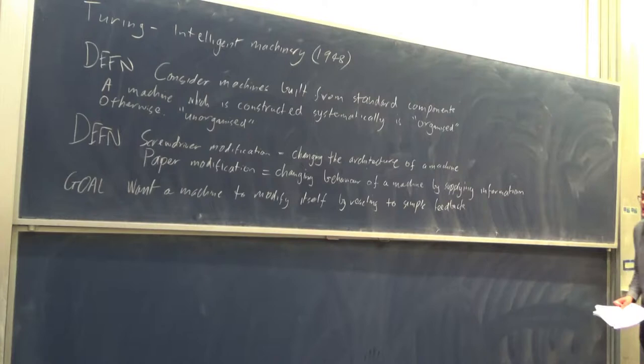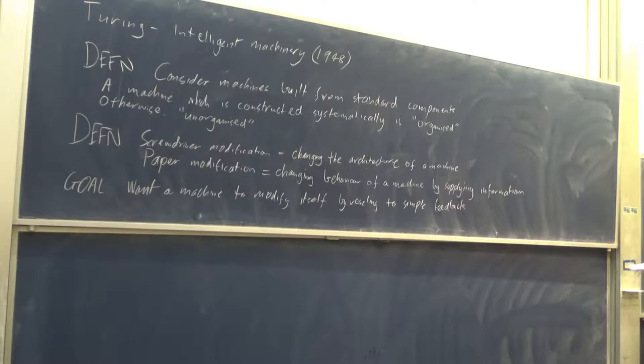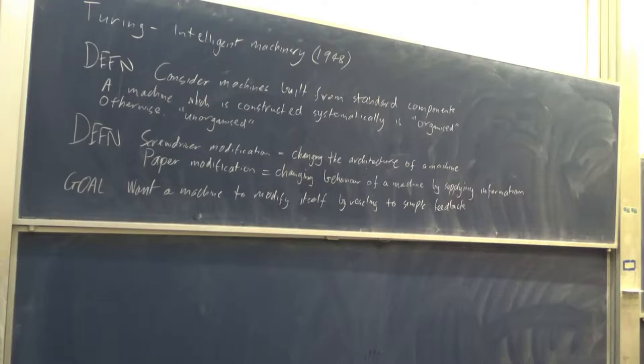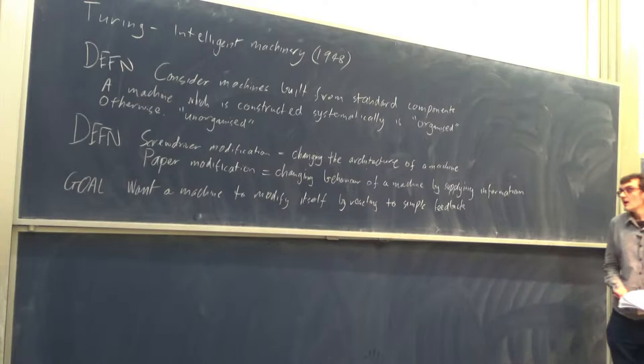The situation we're in is we have some fuzzy idea of what things are correct and what things are wrong. For example, in image recognition, most people can recognise objects in a photograph, but we don't really have any idea how to tell it which ones are dogs and which ones are cats. So we want to be able to give it just simple feedback. Turing in his paper gives binary yes or no answers, rewards and punishments, but I'll argue later that that doesn't give enough control.